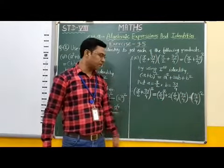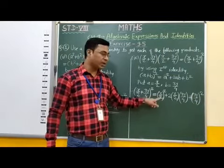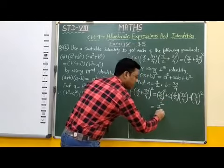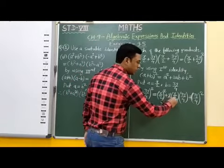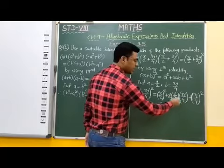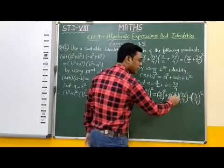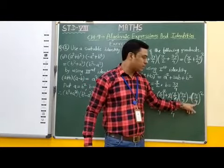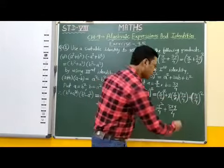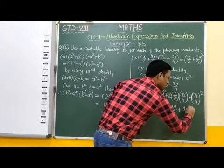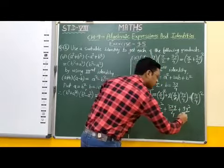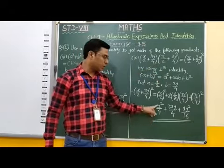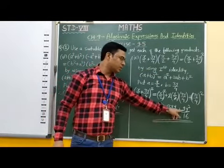Now we simplify the right-hand side. x by 2 bracket squared means numerator squared over denominator squared, which gives x square over 4. In the middle term, 2 cancels, so we get x into 3y over 4, that is 3xy by 4. For the last term, 3y by 4 bracket squared gives numerator squared 9y square over denominator squared 16. Therefore, the multiplication of these two binomials is equal to x square by 4 plus 3xy by 4 plus 9y square by 16.